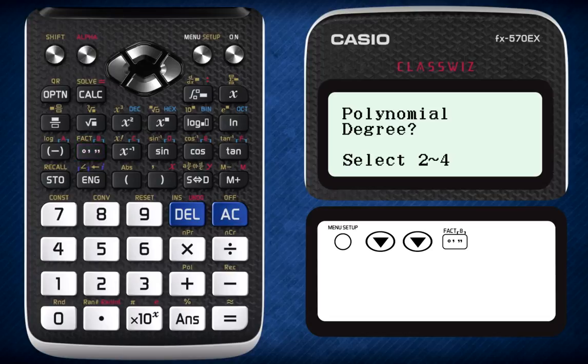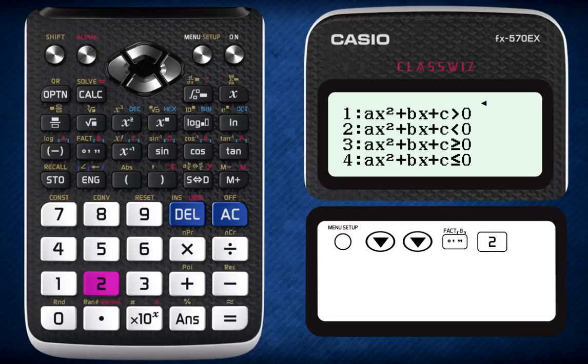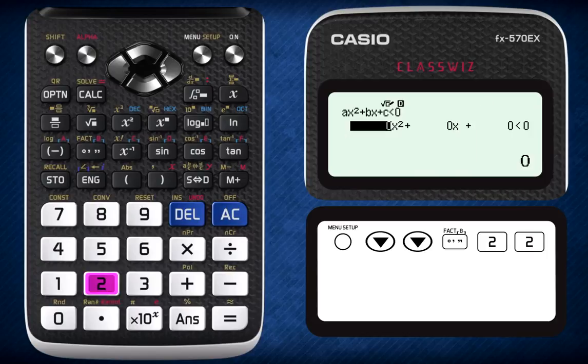Select option b which is the degree and minute button, select 2 for a second degree polynomial, and then select 2 again for negative function inequality.